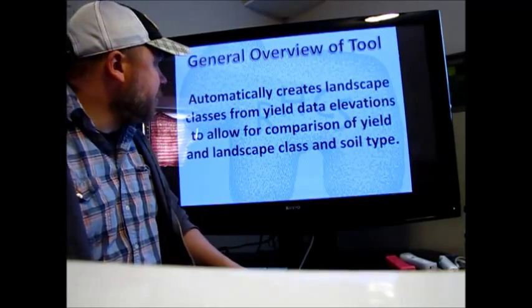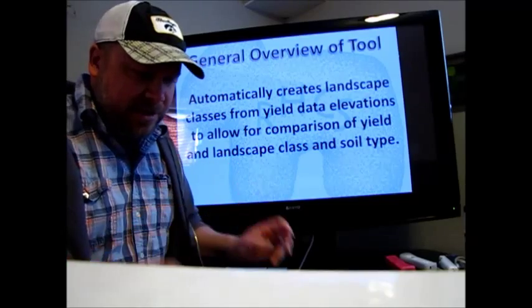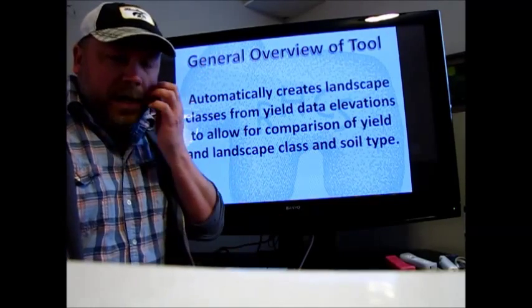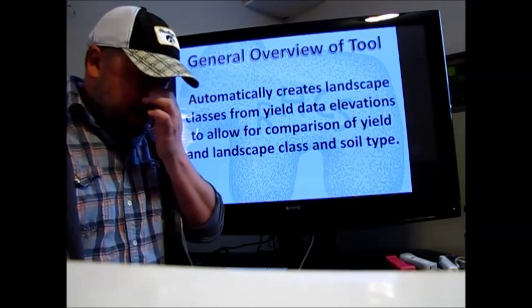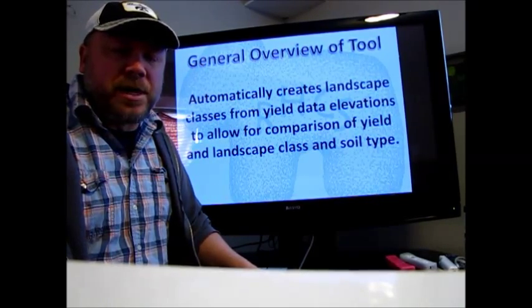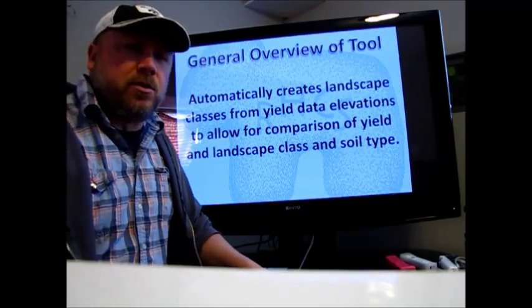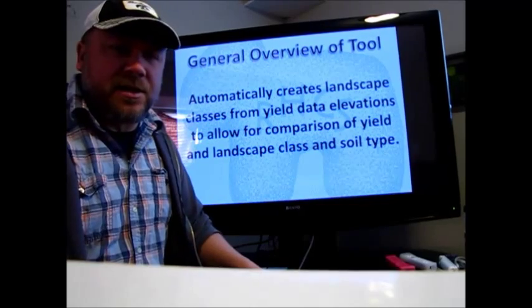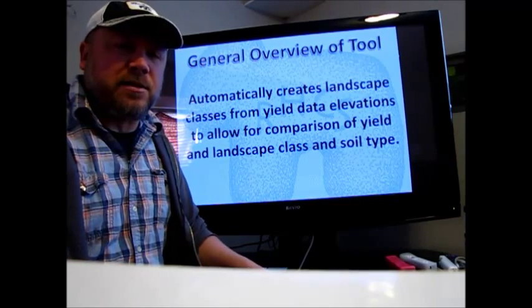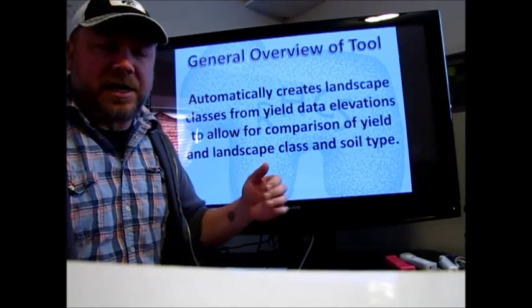What it does is it automatically takes that elevation data from the combine and creates a landform category polygon out of it, so you have these different land classes that you can use to analyze and look at correlations between yield and landform class.